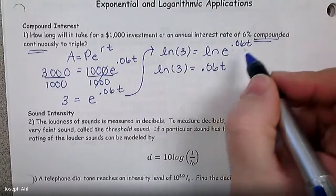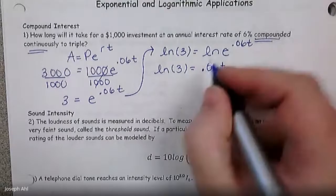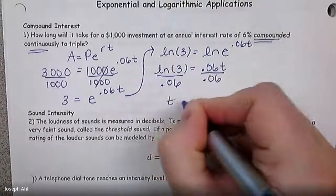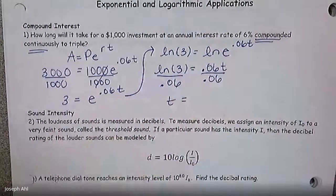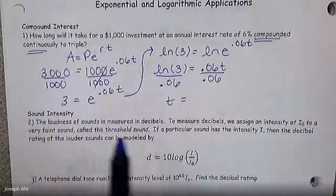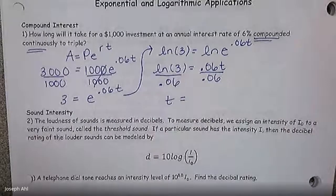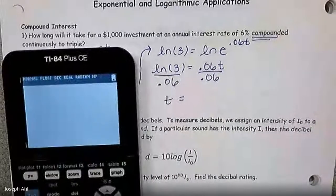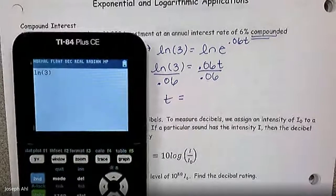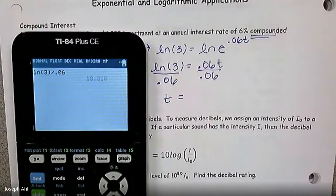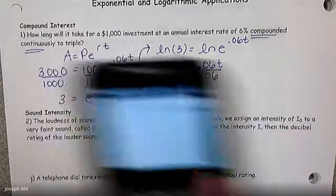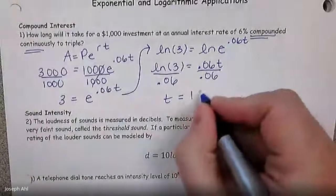So the ln of three equals the ln of E to the point zero six T. Leave this side as ln of three for a moment. ln of E to the point zero six T is just point zero six T. Okay, ln and E, they're inverse functions, they undo one another, so you're left with that exponent of point zero six T. So divide both sides by point zero six to get that the time is the ln of three over point zero six.